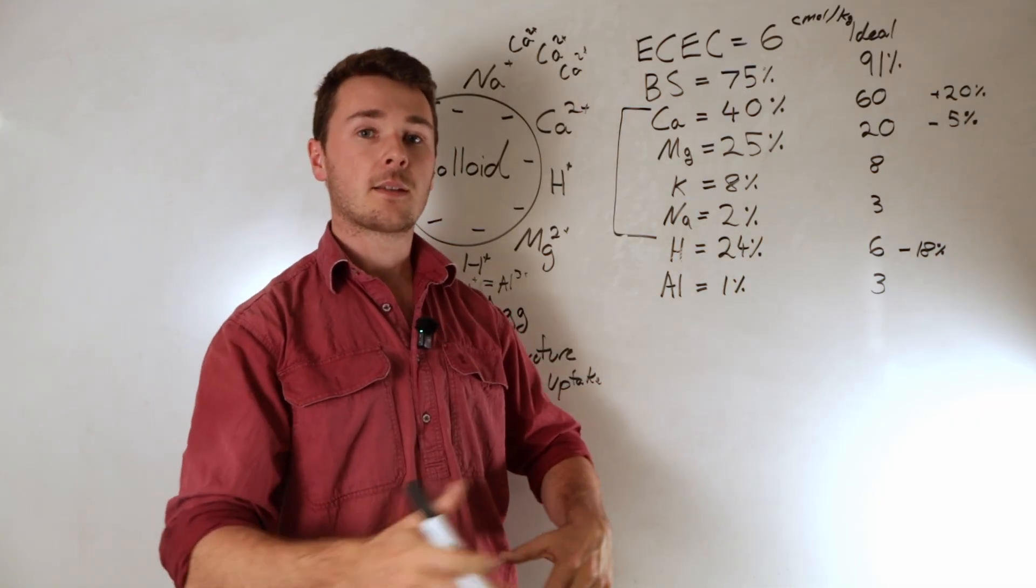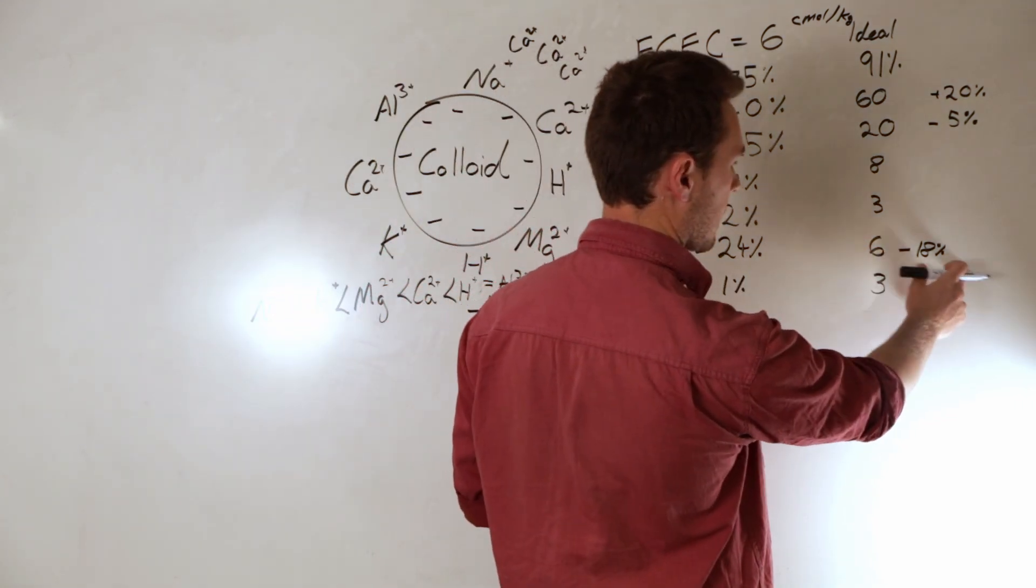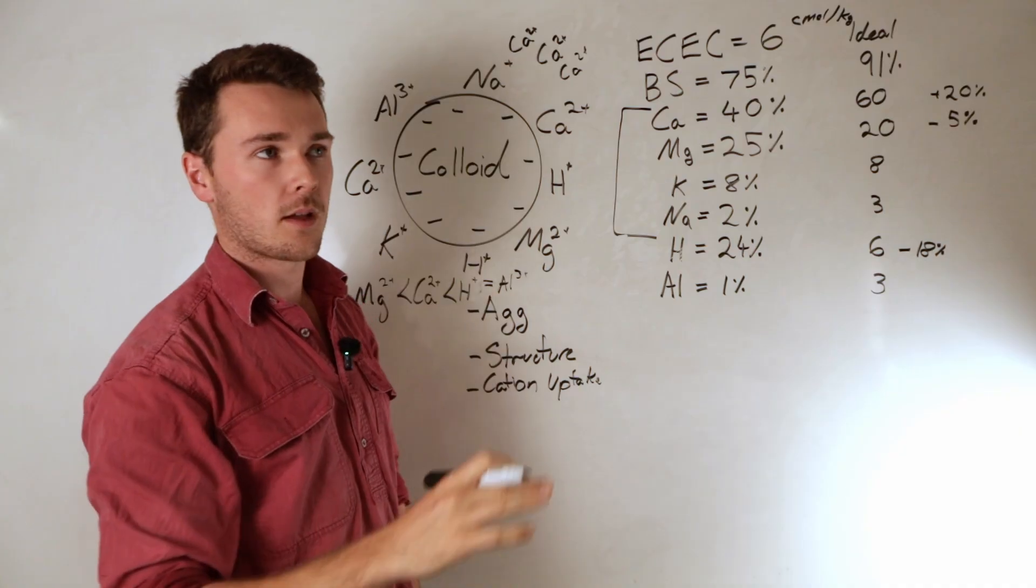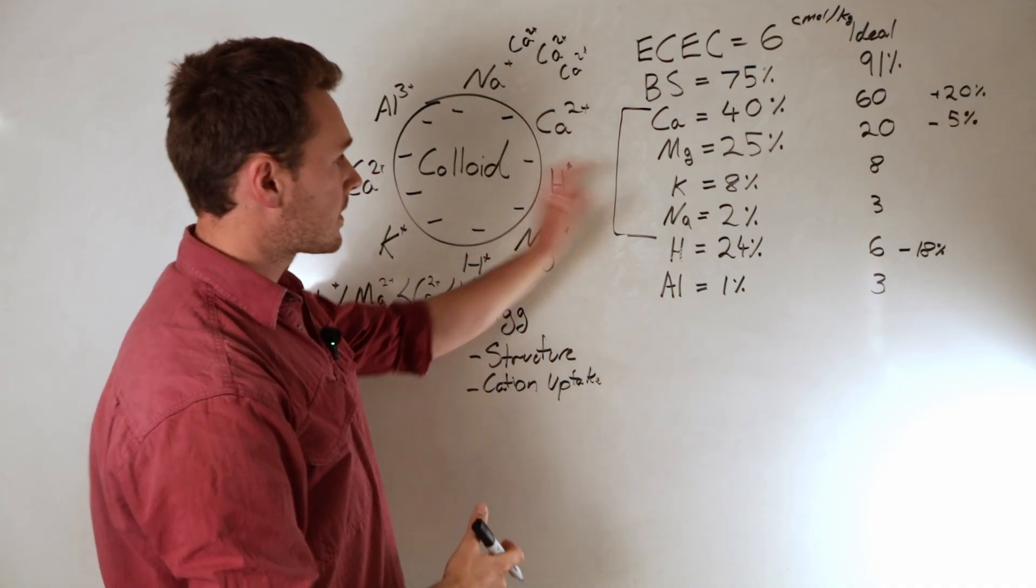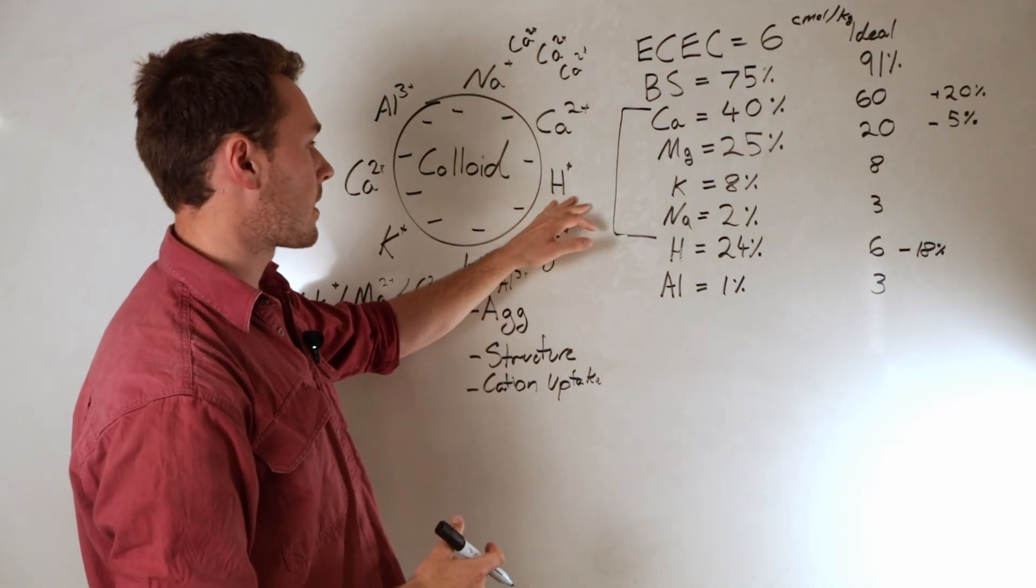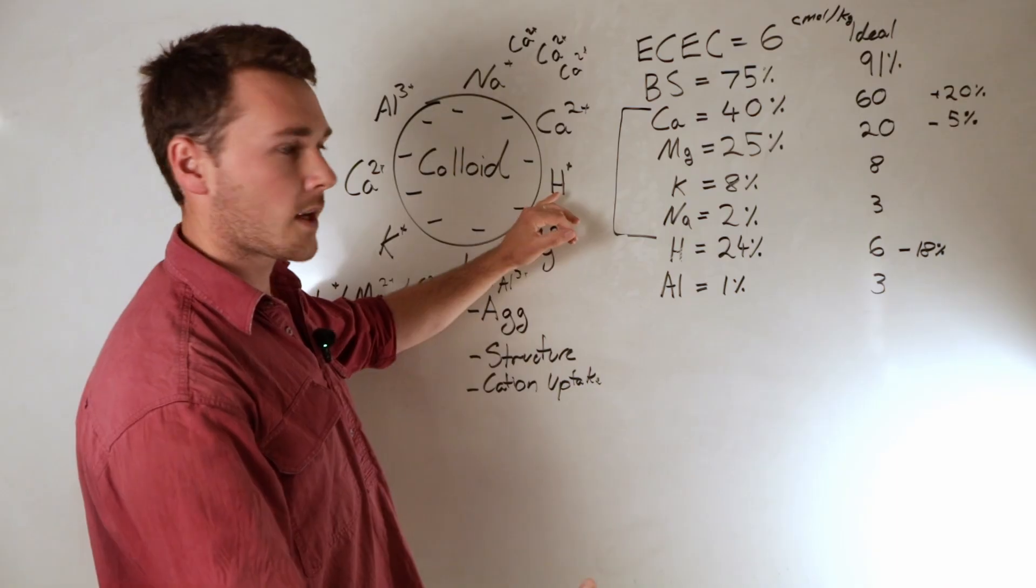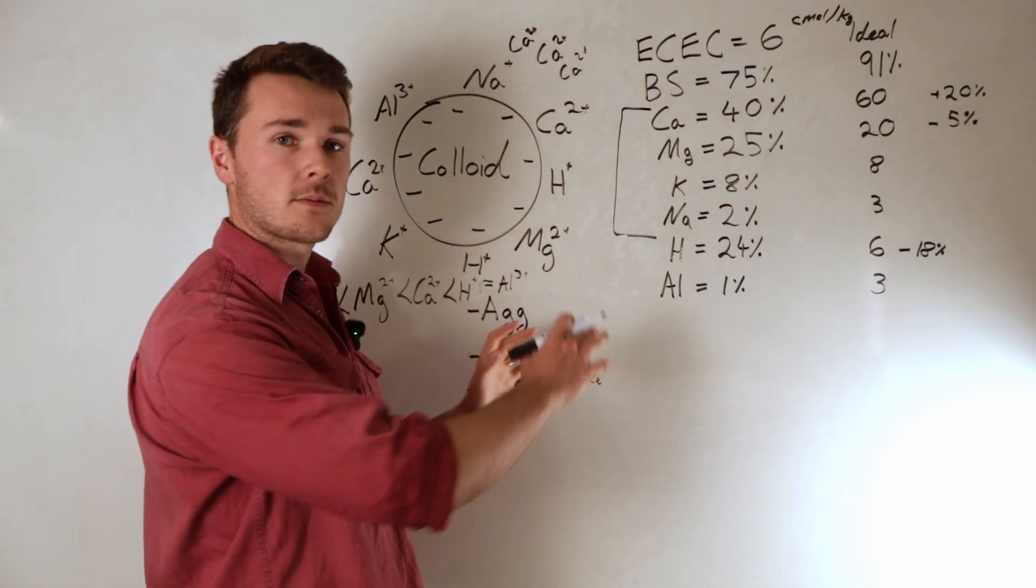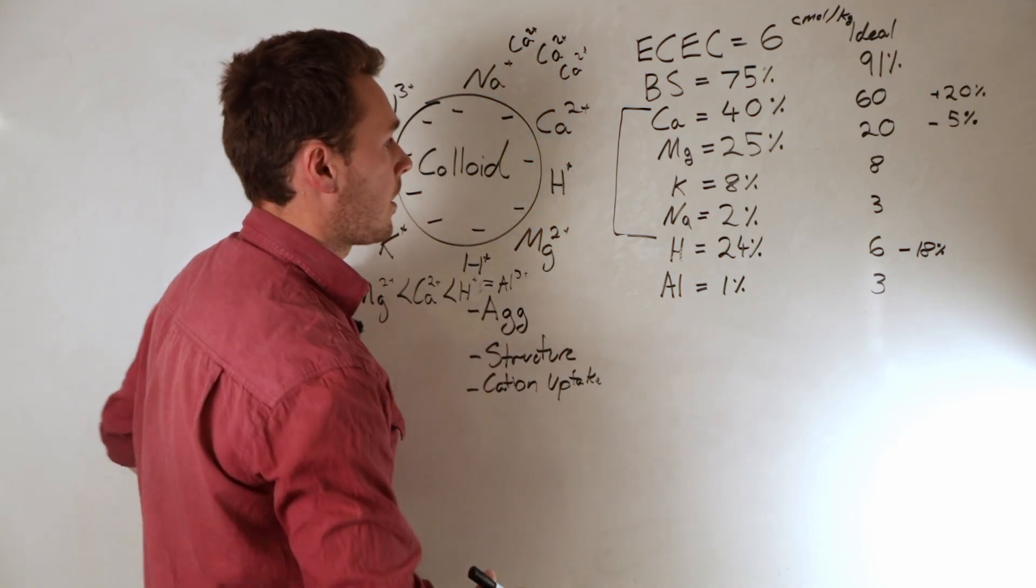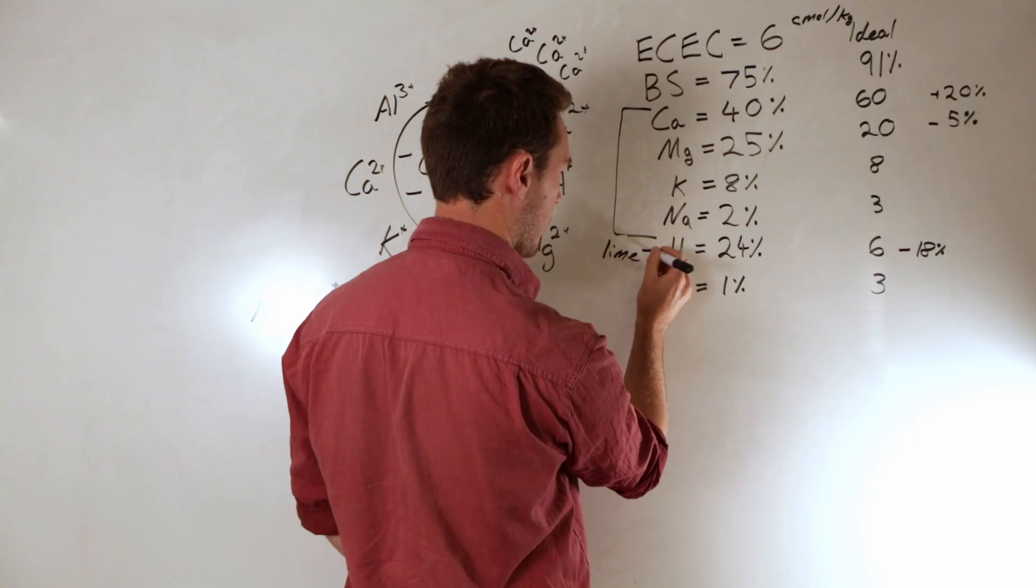And so the way to work this out is we want to convert the percent of the centimoles per kilo, convert that into kilos per hectare of what we want to add. Let's break this up into components and then we can solve for each. So let's say we want to solve for the hydrogen first. Solve for hydrogen, it means we need to add 18% calcium to dislodge that hydrogen. Now we have a video out about addressing acidity. This doesn't address acidity because we're not actually neutralizing the hydrogen. We need to neutralize it with a hydroxide ion or a carbonate or bicarbonate. The only way to do that is with lime or the carbonate component of lime or root exudates.